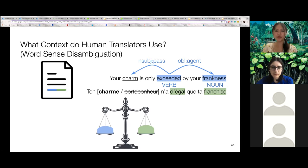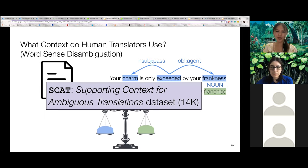Moreover, the source and target sides often contain an equal amount of semantic load that is needed for word sense disambiguation, which is why here, either sides are as useful. And after our user study, we annotated the supporting context for 14,000 examples of pronoun anaphora resolution in English to French, and we release the SCAT dataset.